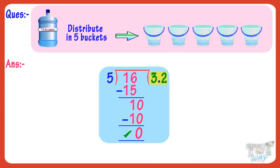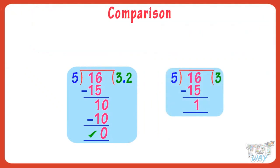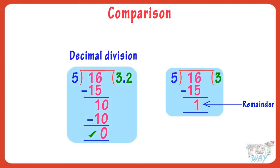We have done the complete division. Our answer is 3.2. That means if we divide 16 liters of water into 5 buckets, each bucket will have 3.2 liters of water. Here is a comparison for you: where we stop the division when we get a number less than the divisor, and where our answer comes in decimals.